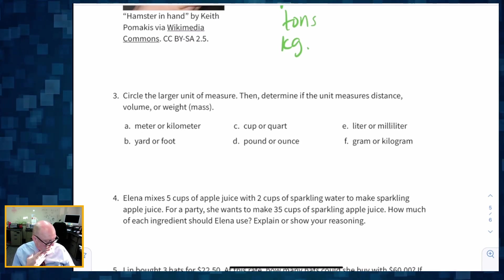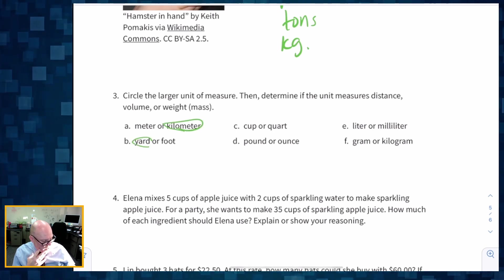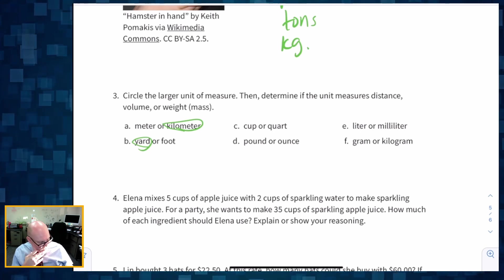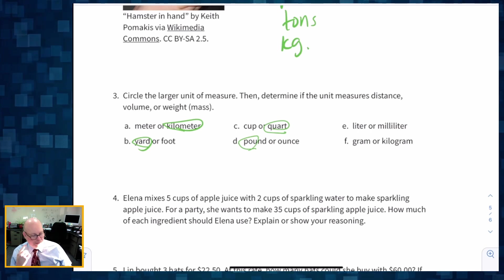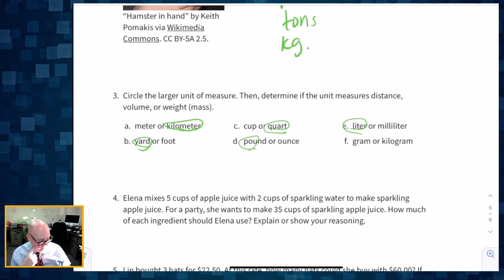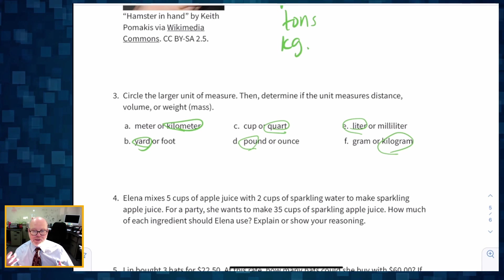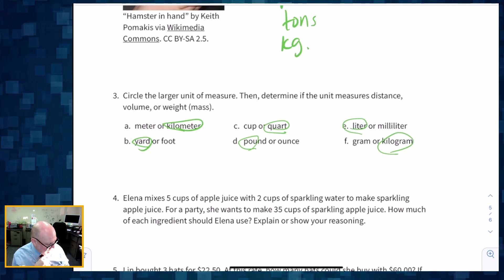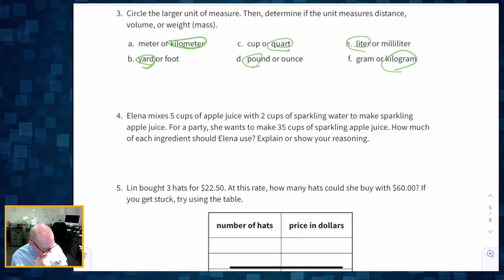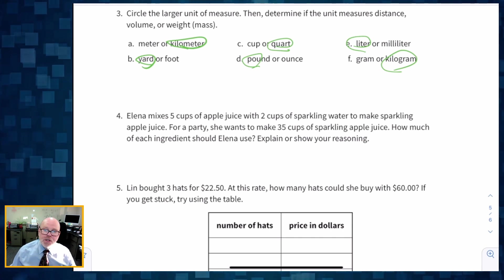And then number three, circle the larger unit of measure. Meter or a kilometer? Kilometer. Yard or foot? Oh, yard. Cup or quart? I'm going with quart. I think there's like two cups in a quart or something like that. A pound or an ounce? Definitely pound. Liter or milliliter? Well, that's the whole point of the metric system. Milliliter means small. Really, really small. 1,000 milliliters in a liter. And same thing here. A gram, a kilogram, a kilo. That means 1,000, but it means we have 1,000 grams in a kilogram.